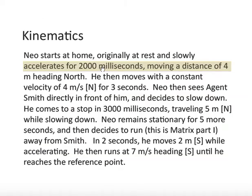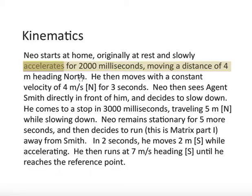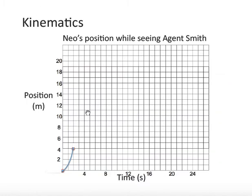And slowly accelerates for 2,000 milliseconds moving a distance of 4 meters. Well, 2,000 milliseconds is 2 seconds. And he moves a distance of 4 meters heading north. So, we put a dot at 2 seconds and 4 meters. And the question is, do we use a line or a curve to connect those two dots? What do we use? Well, the key phrase is accelerates. Automatically, acceleration means you need a curve. And so, the graph would look something like this. It's speeding up. So, shallow slope to a steep slope.